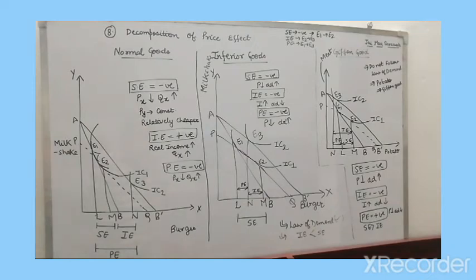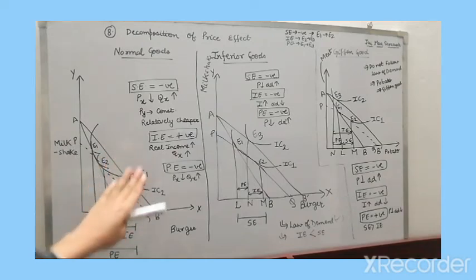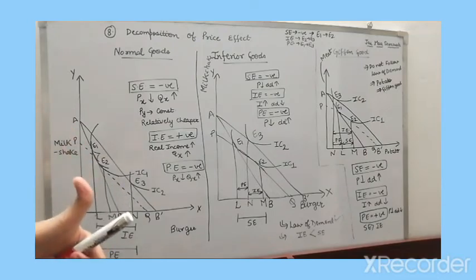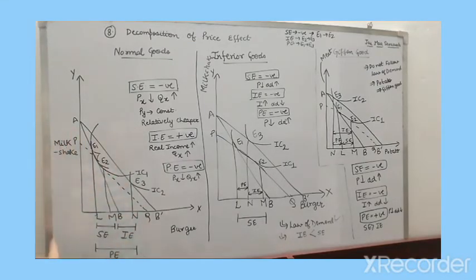Now for normal goods: substitution effect is negative. For income effect — income increased, real income increased, so quantity also increased — income effect is positive. Price effect is negative because price fell and quantity rose — inverse relation means negative. E1 came, E2 came, E3 came — substitution effect here, income effect here — that is the case for normal goods.